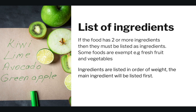One of the main things we need to look at on the label is the list of ingredients. If the food has two or more ingredients then it must be listed as ingredients. There are some foods that are exempt from this, such as fresh fruits and vegetables. Ingredients are listed in order of weight — the main ingredient will be listed first and the smallest ingredient will be listed last.